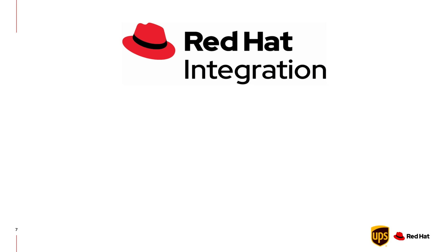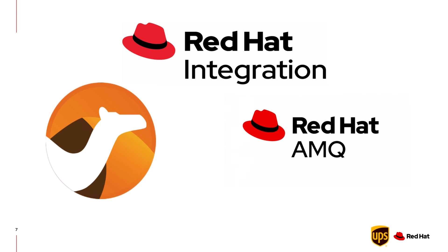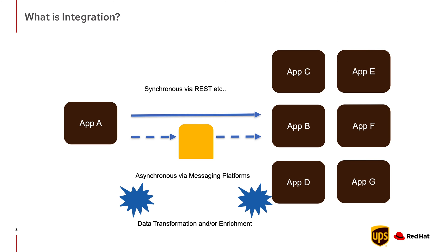So we partnered with Red Hat. We used a product now called Red Hat Integration — in the past it was called Red Hat Fuse. From within there we used two main components: the Red Hat build of Apache Camel and Red Hat AMQ. Apache Camel fits in with all the protocol, transformation, and enrichment pieces, and Red Hat AMQ fits in on the messaging side. That's where that product bundle comes into play.